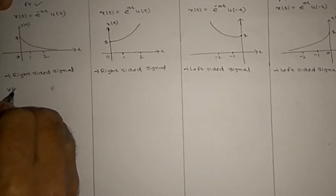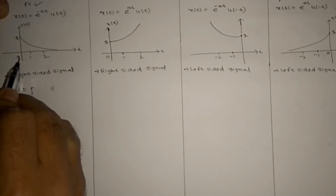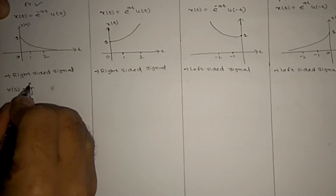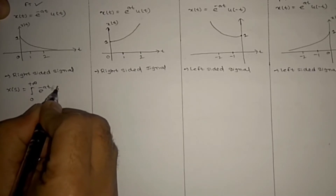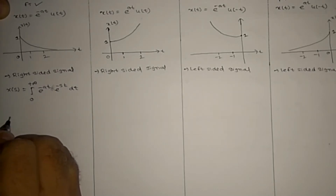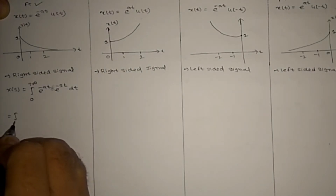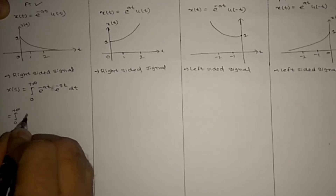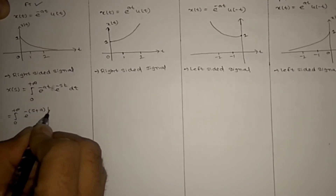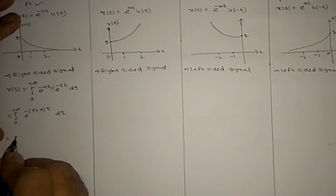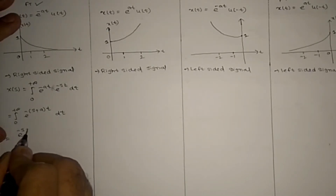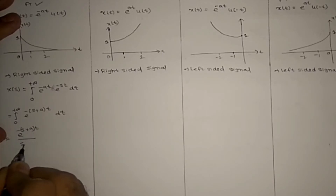For Signal 1, X(s) equals: from minus infinity to 0 is 0, so we only have from 0 to plus infinity. That is e^(-at) times e^(-st) dt. Integrating this signal from 0 to plus infinity gives e^(-(s+a)t) dt.